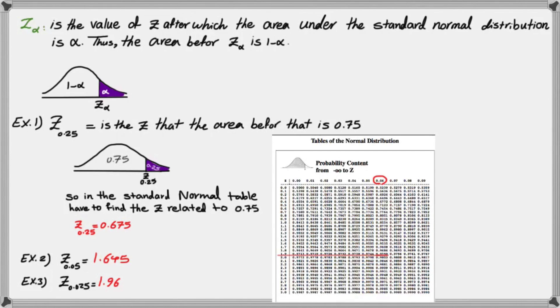So as a general rule, every time that you want to calculate Z of alpha, find the value of 1 minus alpha inside your table and report the value of Z associated to that 1 minus alpha as your Z of alpha.